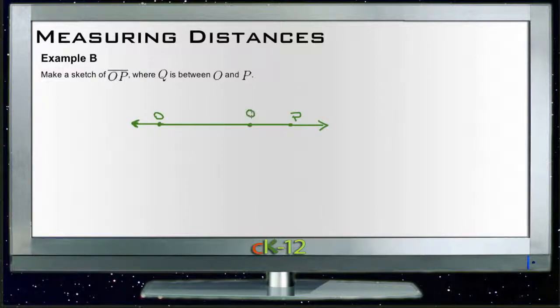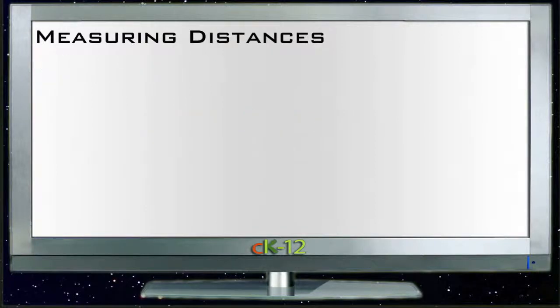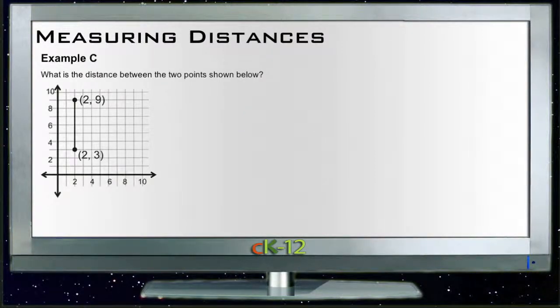And then finally, for example C, it says what is the distance between the two points shown below. It doesn't ask us for inches or centimeters or anything else, it just wants to know a specific distance. So we're going to assume that the unit of measurement they're asking for is the unit of measurement on our XY graph, so basically just in tick marks. If we start at this point here, this one starts at 2,3, so it's two over on the x-axis and then three up on the y-axis.